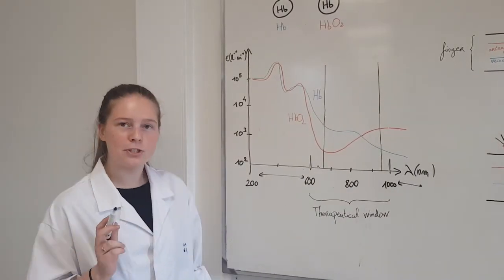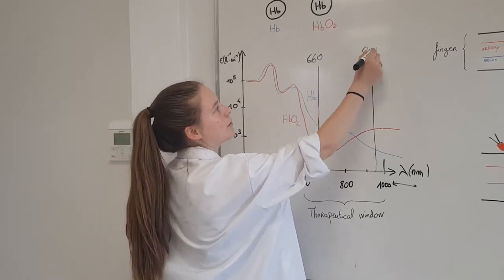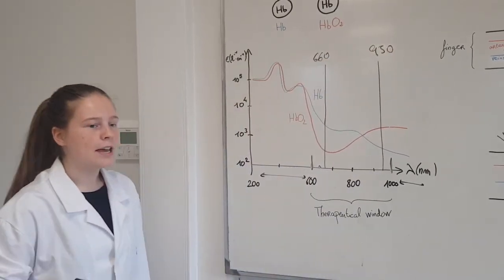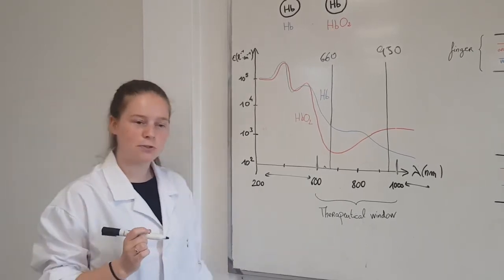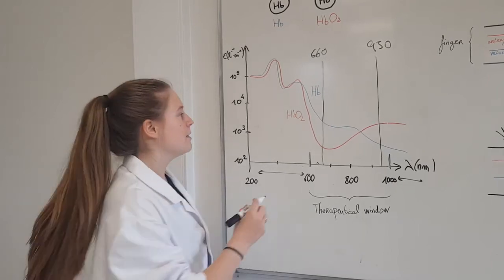The wavelengths we chose are 660 nanometers and 950 nanometers. These wavelengths were chosen so that the absorption rates of hemoglobin and deoxyhemoglobin differ enough.